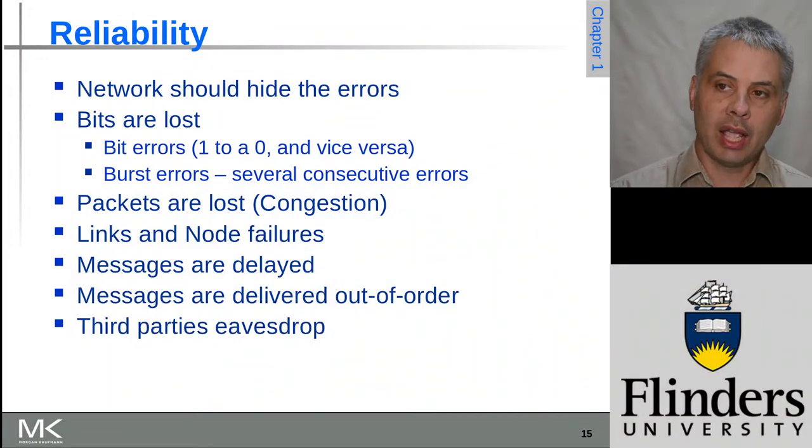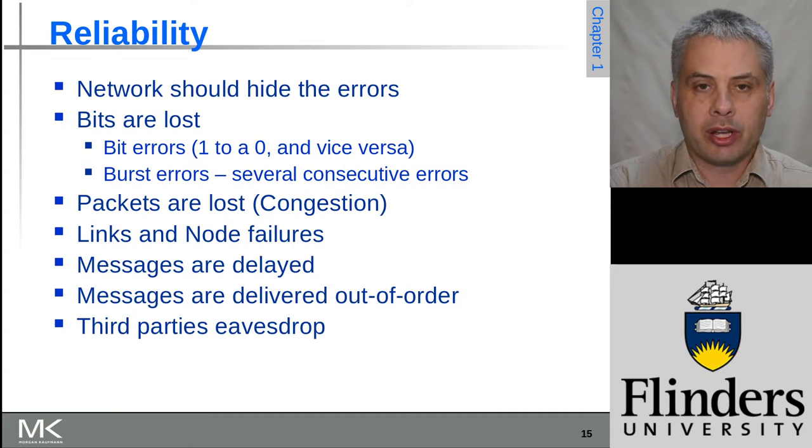Welcome back to Computer Networks. Today we are looking at reliability. We've talked about abstraction and the kinds of services that we like to get from networks, but implicit in that is we actually want them to be reliable. We don't want there to be errors. All of these come down to reliability, and what we really mean is that the network should be able to hide errors that happen during the transmission of data.